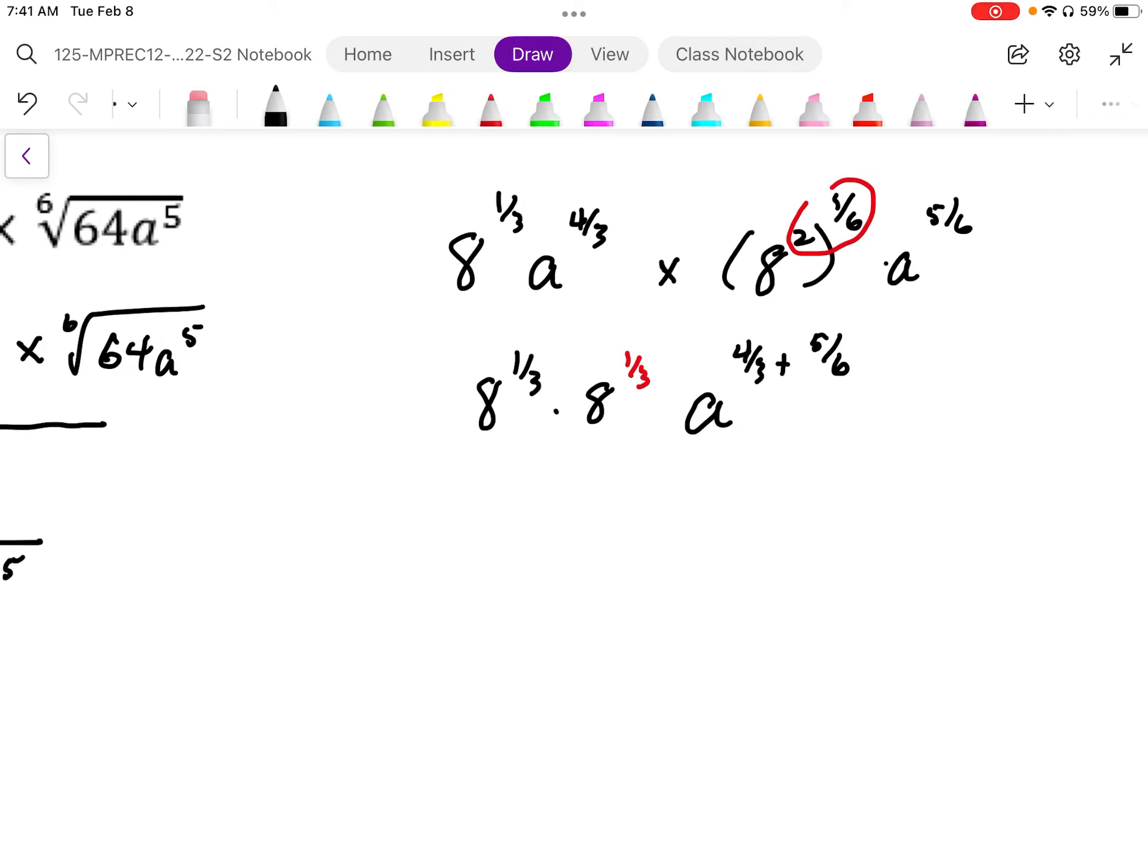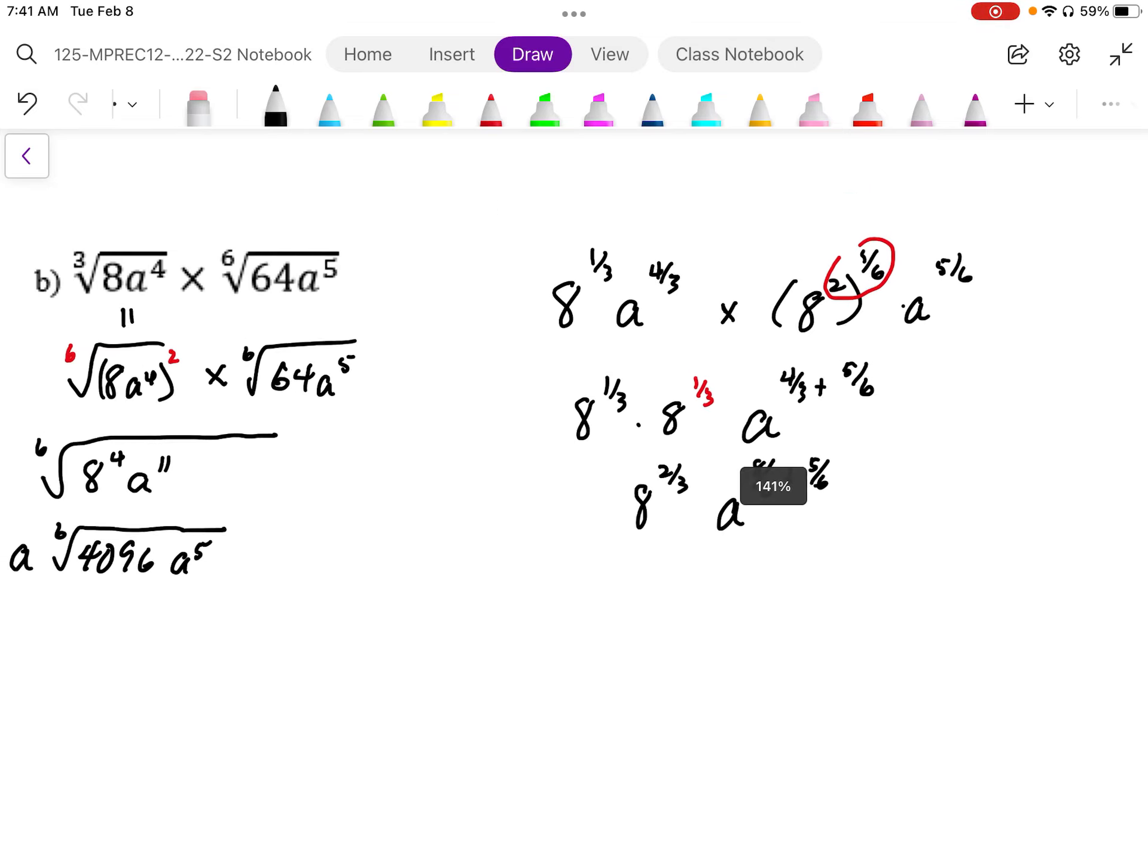So in order to add these together, my common denominator is going to be 6. So I end up with a, 8 to the power of 6, plus 5 to the power of 6.